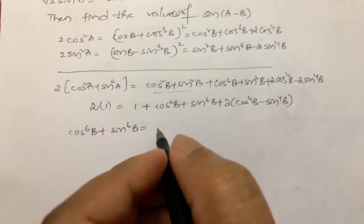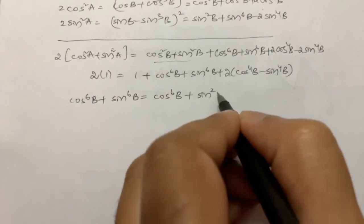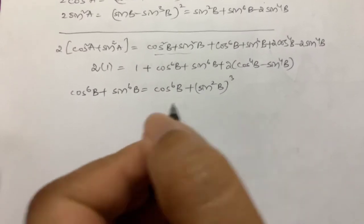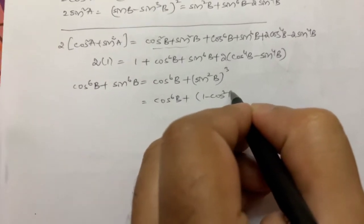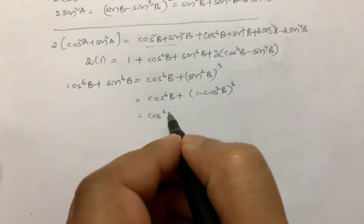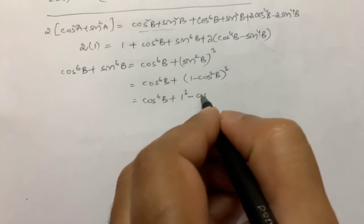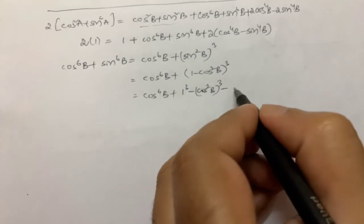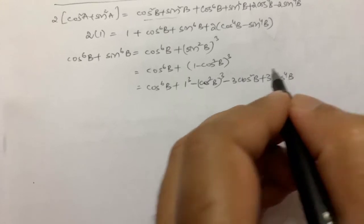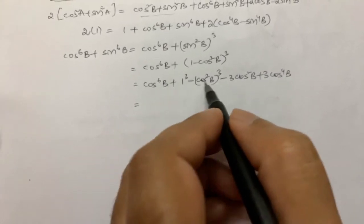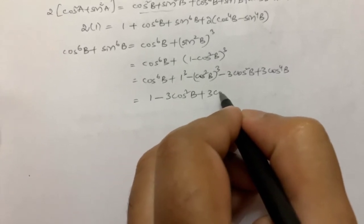I will write sin⁶ B as (sin² B)³ = (1 - cos² B)³. Using the expansion a³ - b³, this becomes 1 - cos⁶ B - 3 cos² B + 3 cos⁴ B. So cos⁶ B + sin⁶ B simplifies to 1 - 3 cos² B + 3 cos⁴ B.